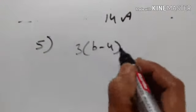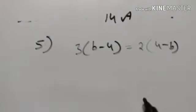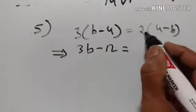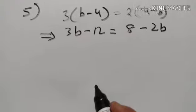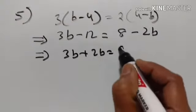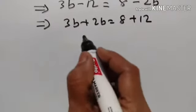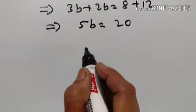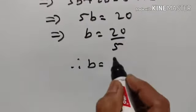5th problem: 3 into b minus 4 is equal to 2 into 4 minus b. 3b minus 12 is equal to 8 minus 2b. Minus 2b is transposed to this side, it becomes 3b plus 2b is equal to 8 plus 12. 3b plus 2b is equal to 5b. 5b is equal to 20. b is equal to 20 divided by 5. Therefore, b is equal to 4.